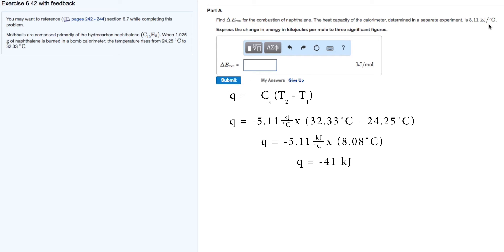That means there was 41 kilojoules of total energy released from the 1.025 grams of naphthalene.